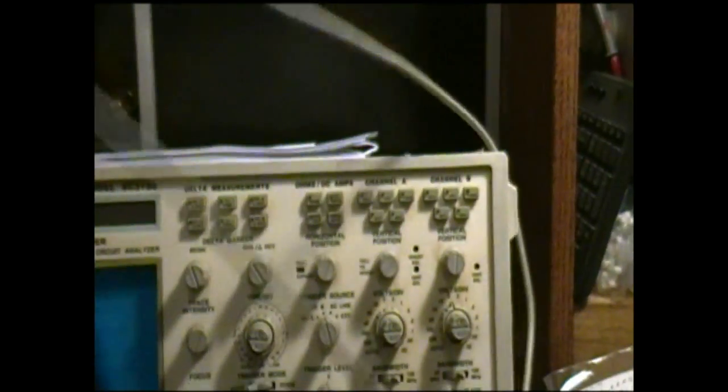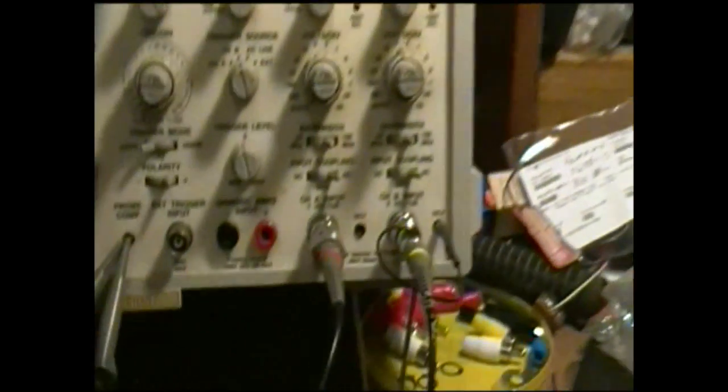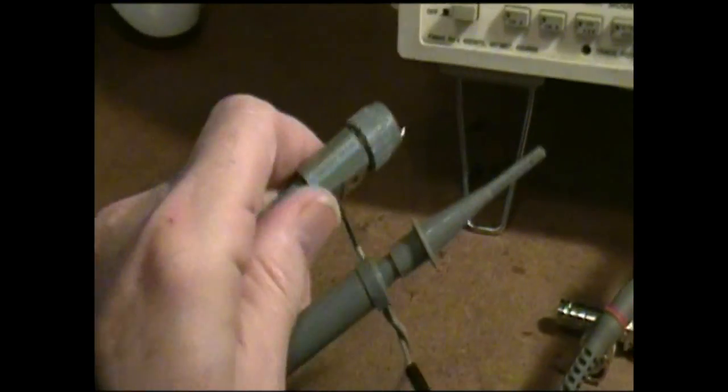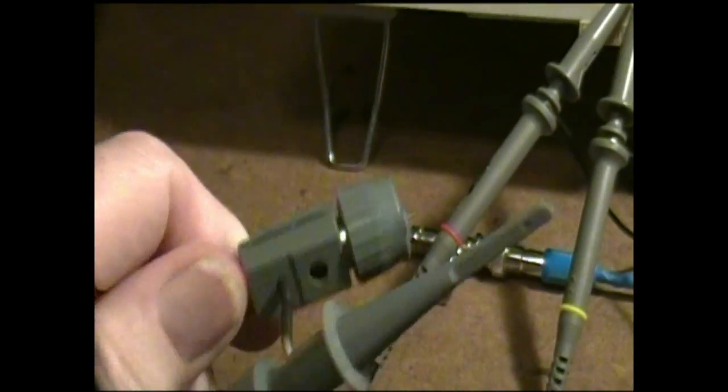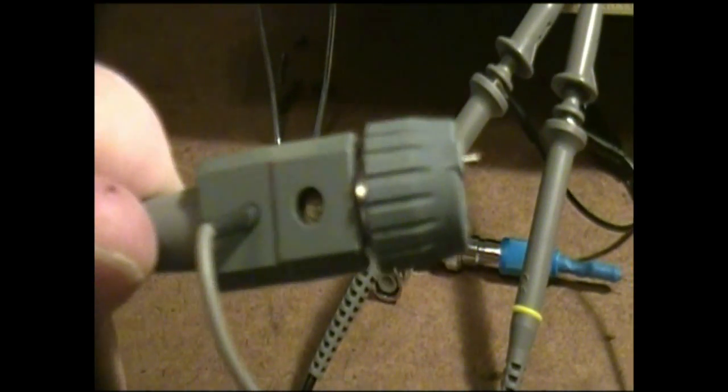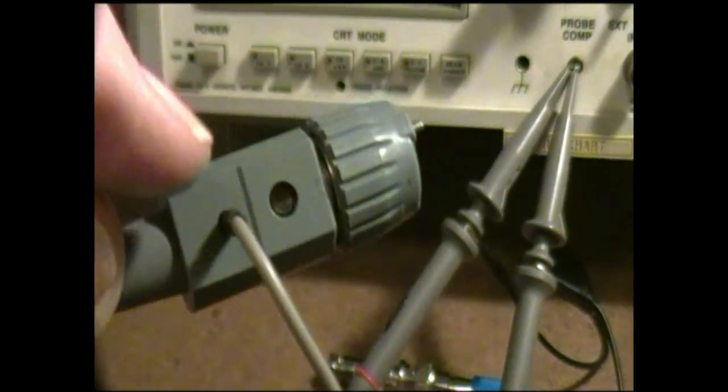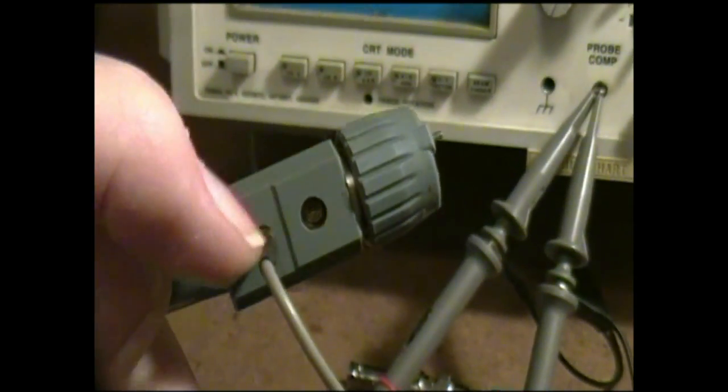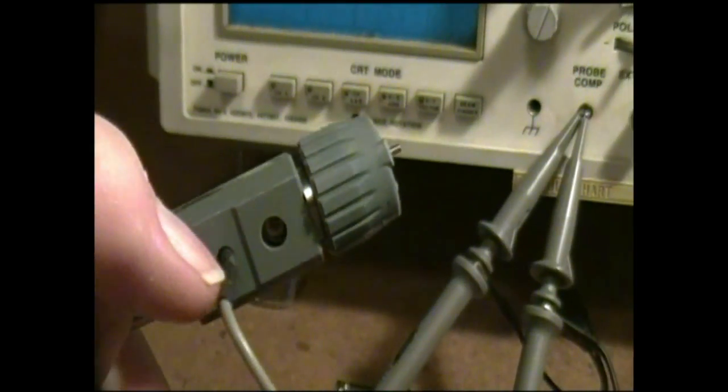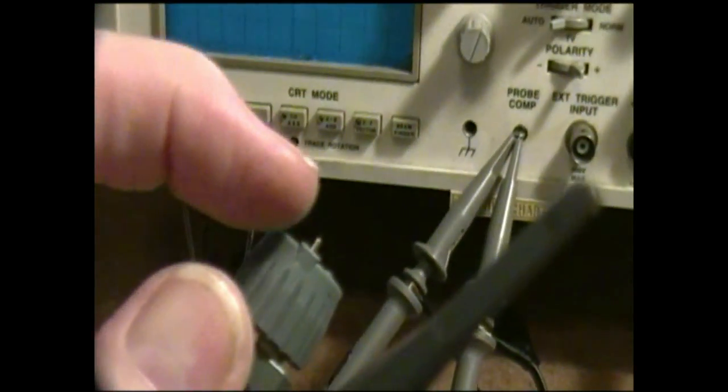This is an original Sencore probe. If you look carefully at the BNC connector, you'll see two things: one is there's an extra connection coming out the side here, and the second thing is you notice there's a little metal tip sticking out there.